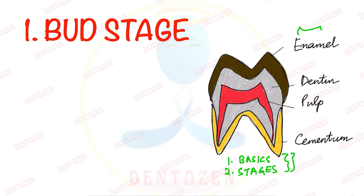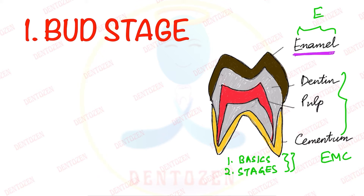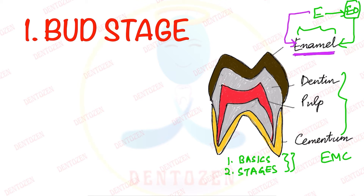From these videos we have learned that enamel forms from ectoderm, whereas dentine, pulp, and cementum form from ectomesenchyme. So enamel is the only ectodermal derivative of the tooth. Now these ectodermal cells will proliferate and they will form a structure which is known as the enamel organ. This enamel organ will eventually lead to formation of enamel.